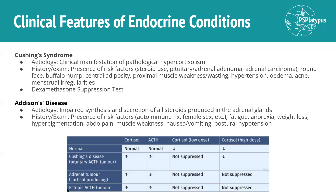Addison's disease is impaired secretion of all steroids produced in the adrenal gland — essentially the opposite of Cushing's. In terms of history and exam, the presence of risk factors is important: a significant autoimmune history or female sex predisposes to Addison's. Symptoms you might find include fatigue, anorexia, weight loss, hyperpigmentation, abdominal pain, muscle weakness, nausea, vomiting, and postural hypotension.